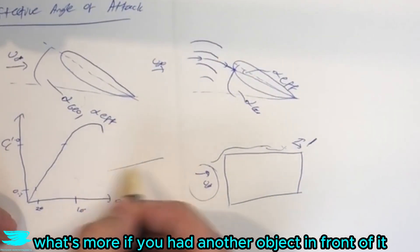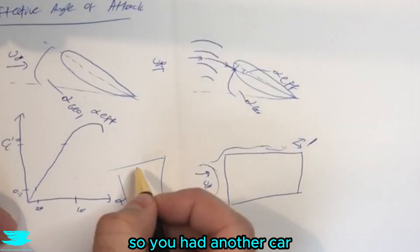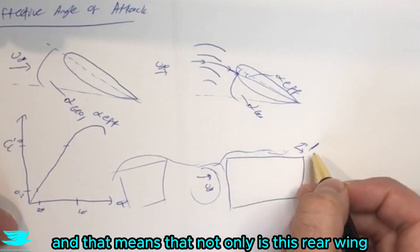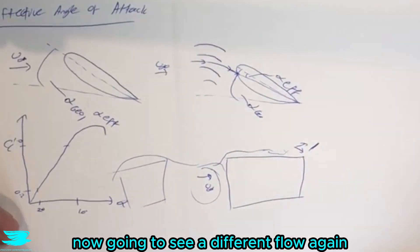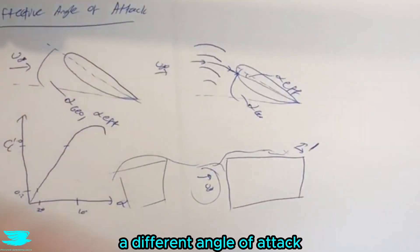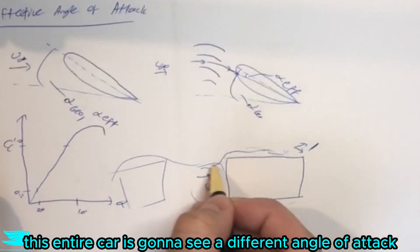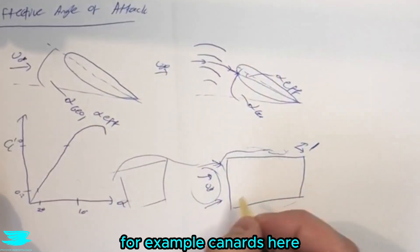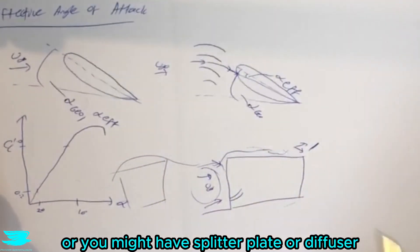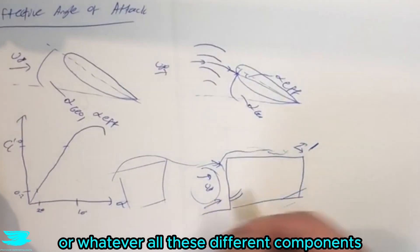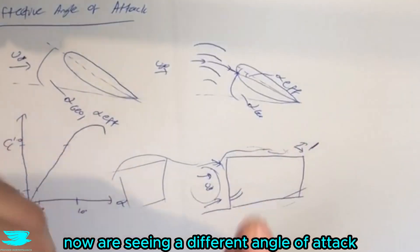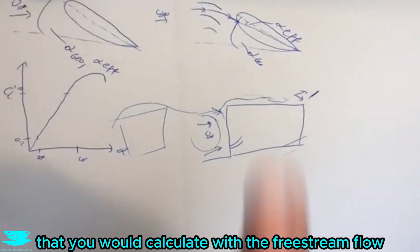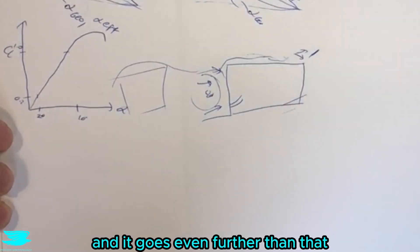What's more, if you had another object in front — another car — you now have another wake to contend with, and not only will this rear wing see a different flow and angle of attack, but the entire car will see a different flow. Different components around the car — canards, splitter plates, diffusers — all of these now see a different effective angle of attack compared to what you'd calculate with the free stream flow.